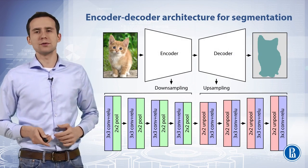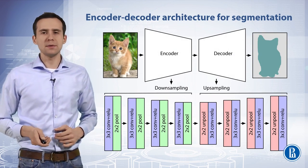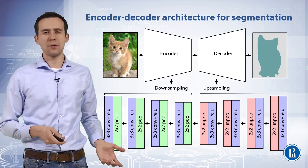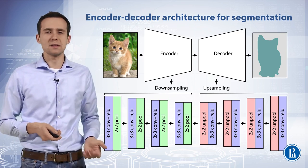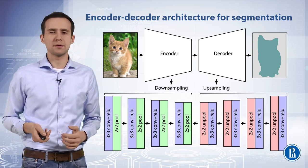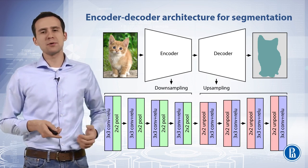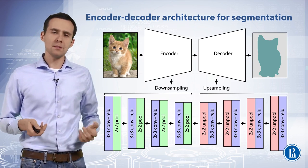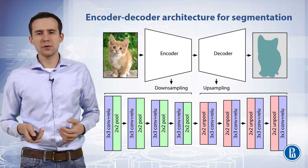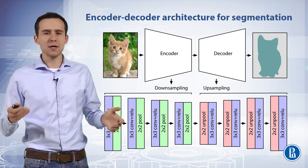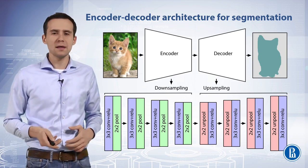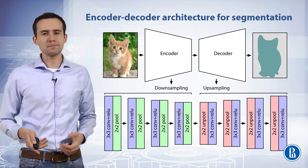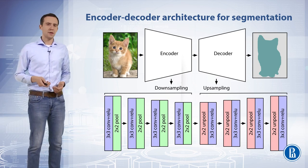A different approach to solving semantic segmentation via deep learning is based on a downsampling-upsampling architecture, where both the left and right parts have the same size in terms of number of trainable parameters. This approach is also called the encoder-decoder architecture. The main idea is to take the input image with size n×n, compress it with a sequence of convolutions, and then decompress it to get the output with the original size n×n.